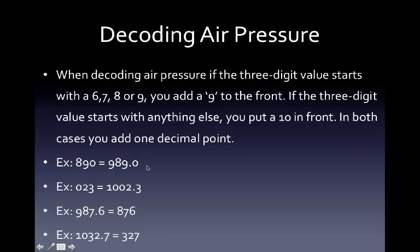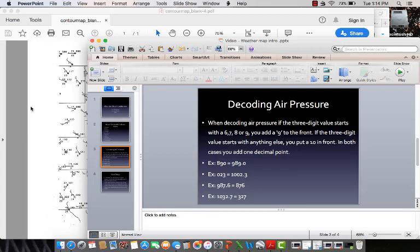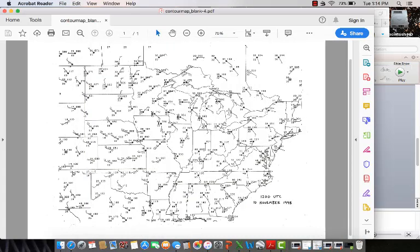To show you what this weather map looks like, you should be looking at this map of part of the United States. You can see New York State over here, and then Nebraska, Texas. This map is pretty busy—it's a lot of information on it.